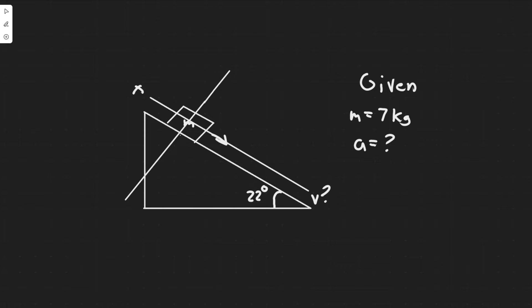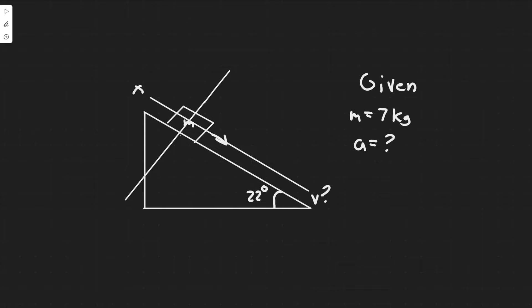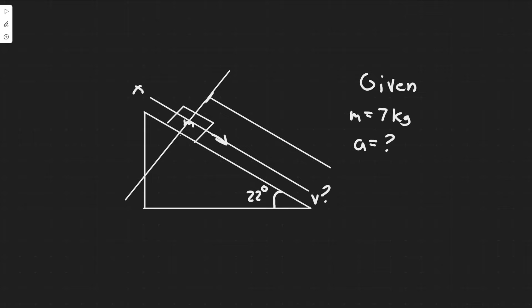Whenever I do problems like this, I always like to write down our givens first. We know the mass of the block is 7 kg. We're going to be solving for two things: acceleration A in part A, and then in part B, we solve for the velocity of the block when it reaches the bottom of the plane. We know the distance is 12 meters up the plane, and the angle is 22 degrees to the horizontal.